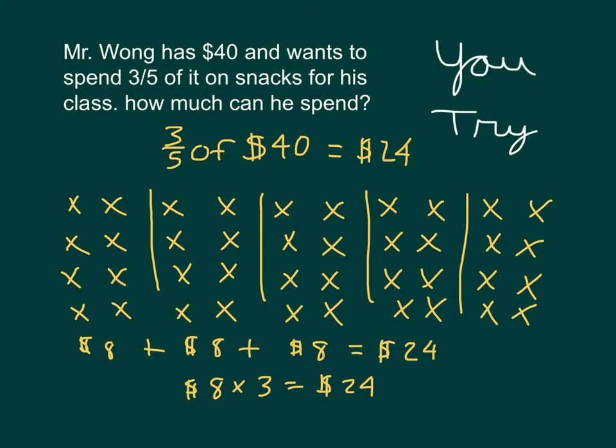Mr. Wong has $24 to be able to spend on snacks. One of the big keys here is to be careful to make sure that you're looking at the correct amount. In this case, we're looking at 3 of those fifths. And then also making sure that there are equal amounts within each of those groups as we're working through a problem. The most common mistake when you're looking at 3/5 of $40 is to accidentally put $8. That only being one fifth. 3/5 of $40 is $24.